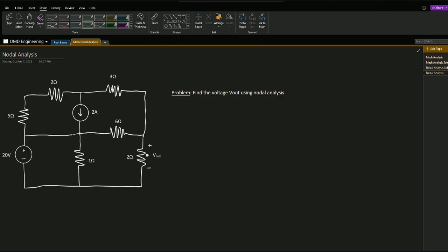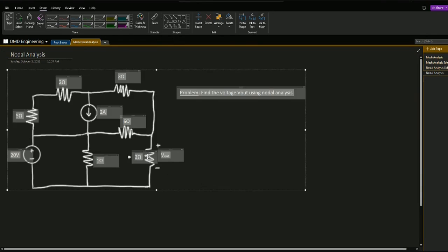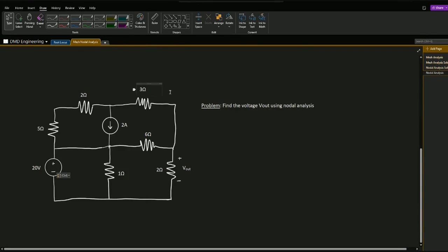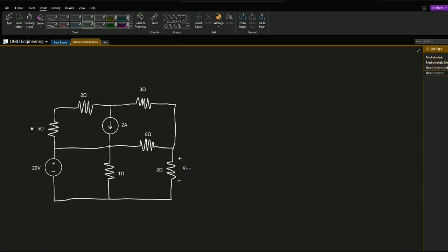Before we start this problem I see something that we can simplify, so I'm going to do that before we define our nodes. Let me just make a copy of this down here. I see we have a 5 ohm resistor in series with a 2 ohm resistor and nothing in between them. We can combine those because two resistors in series you can just add them together to get an equivalent resistor.